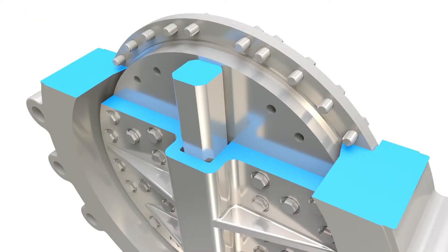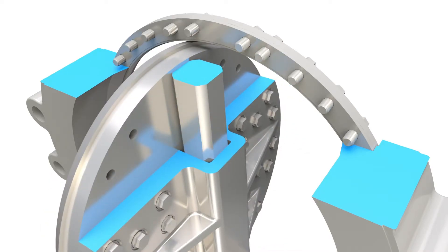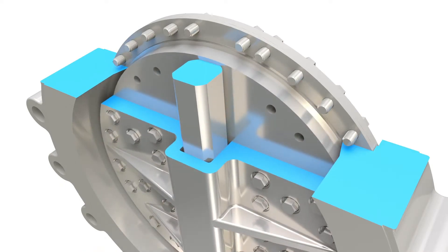The square shaft eliminates backlash with torsional stress distributed over multiple areas, unlike keyed or pin designs that could be compromised over time.